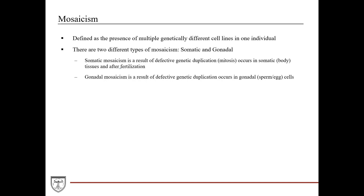Mosaicism is defined as the presence of multiple genetically different cell lines — so at least two, but you could have more — in one individual. One individual has a group of cells with one type of genetic makeup, and another group of cells with a different genetic makeup.